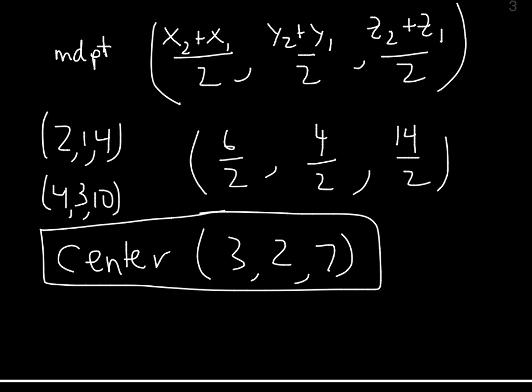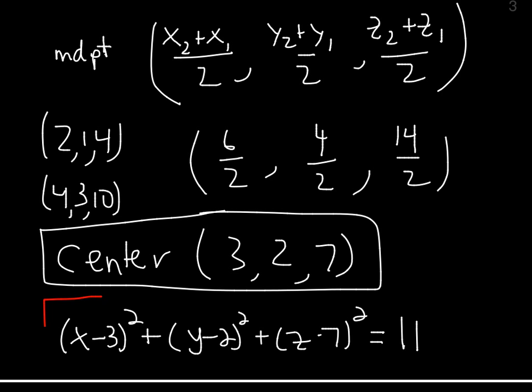Now we're done. The answer is (x - 3)² + (y - 2)² + (z - 7)² = 11. We need the radius squared on the other side of the equals.